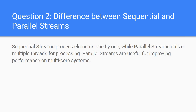I'm providing a brief overview of what they asked and how I replied, but you can explore further so that if they ask cross questions you're prepared. You need to prepare all those features in detail. Question 2: the difference between sequential and parallel stream. Sequential stream processes elements one by one. Parallel stream utilizes multiple threads for processing. Parallel streams are useful for improving performance on multi-core systems. Use sequential stream when you need ordered output; use parallel stream when you need fast processing.